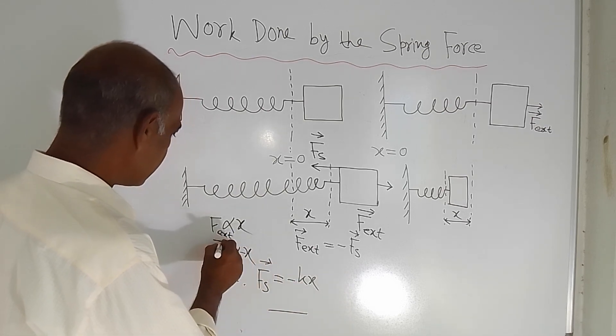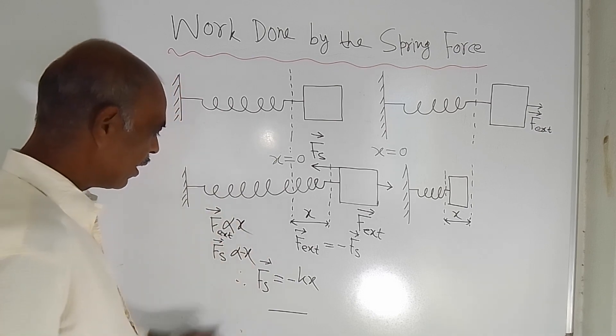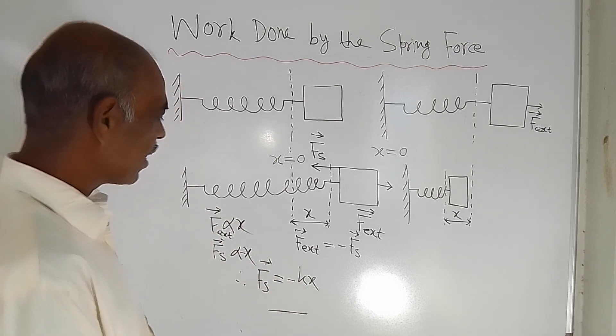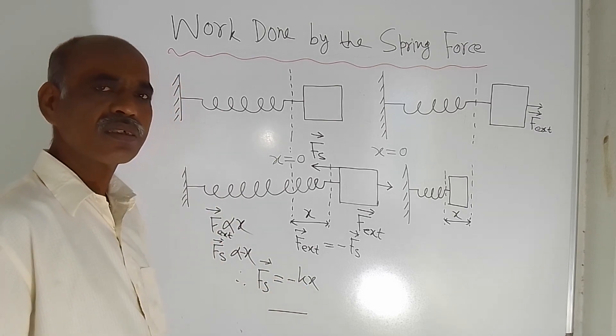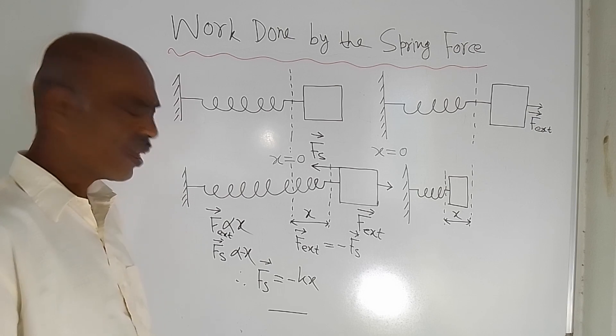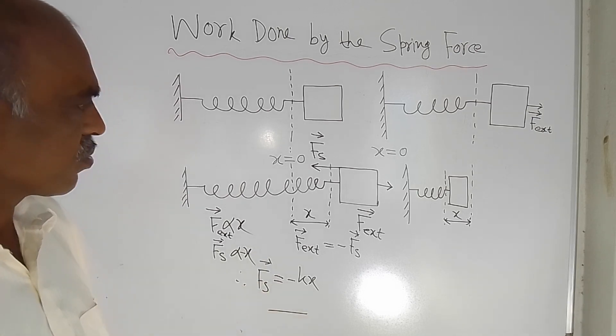Scientists found that F_S is proportional to X. Therefore we can write F_S equals a constant multiplied by X, so F_S = −Kx. This is the spring force equation.